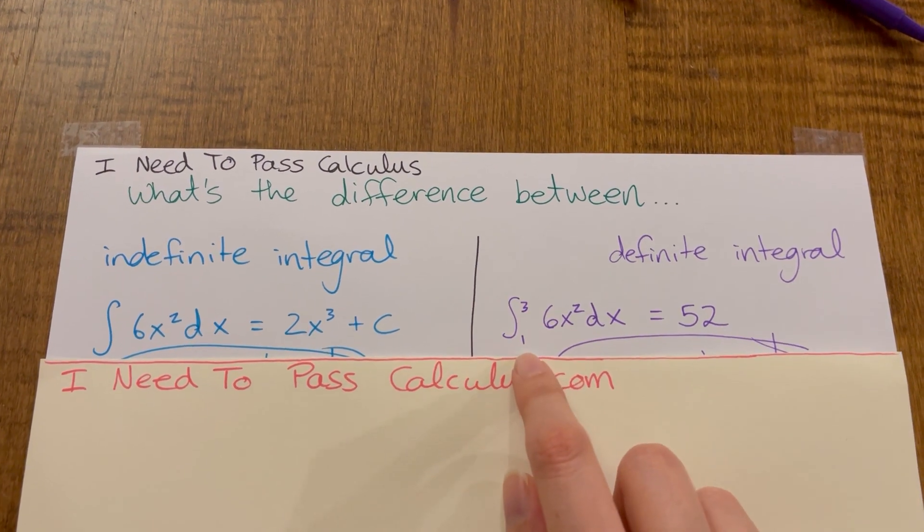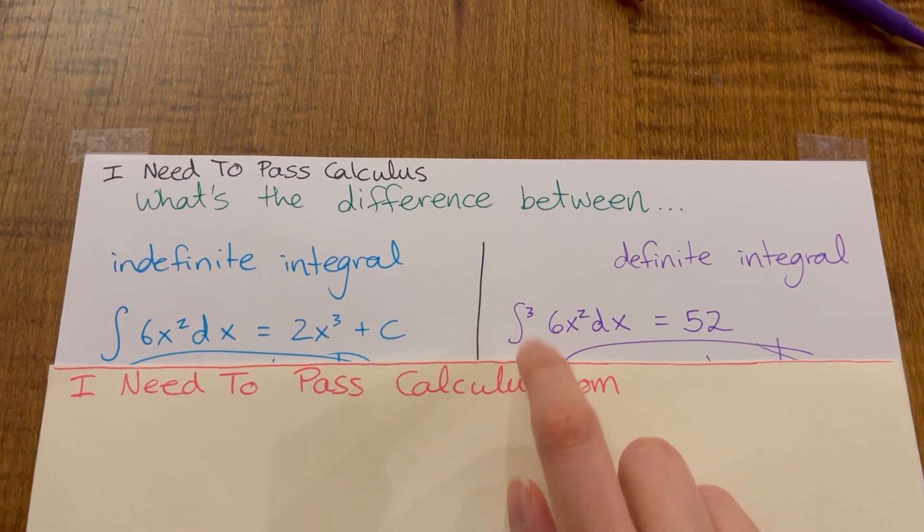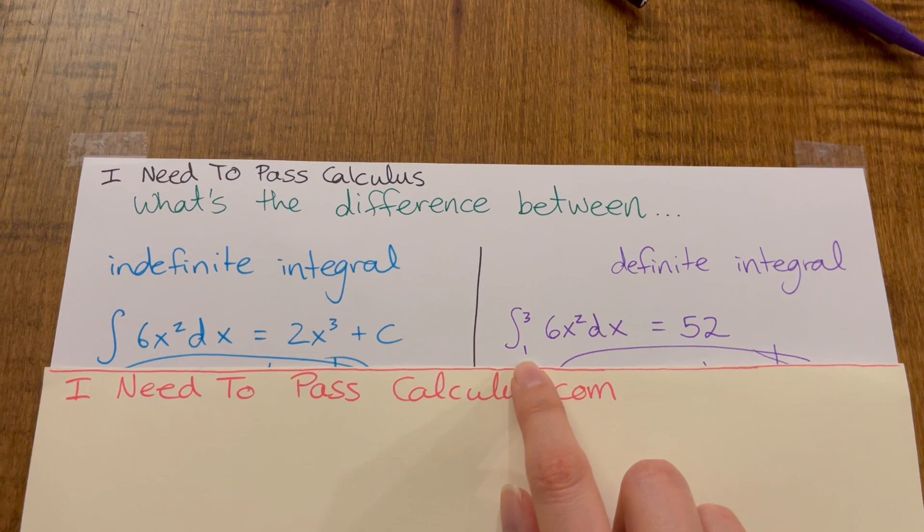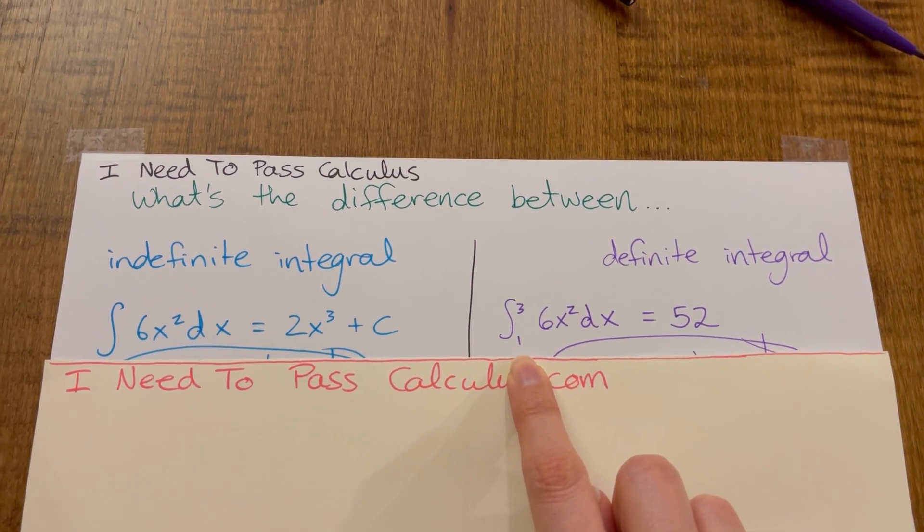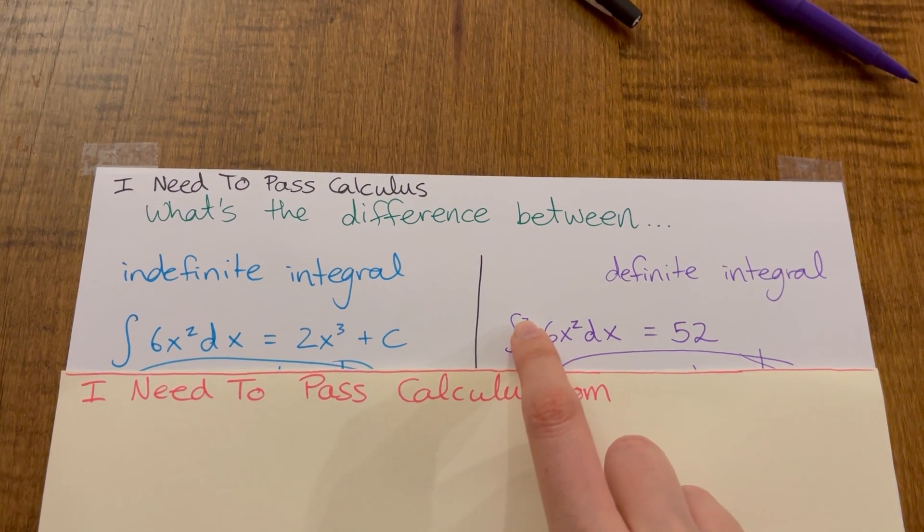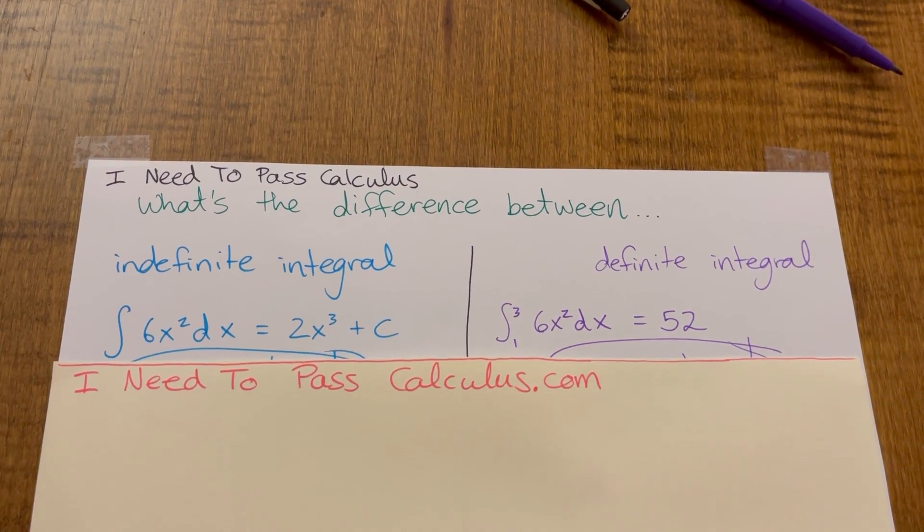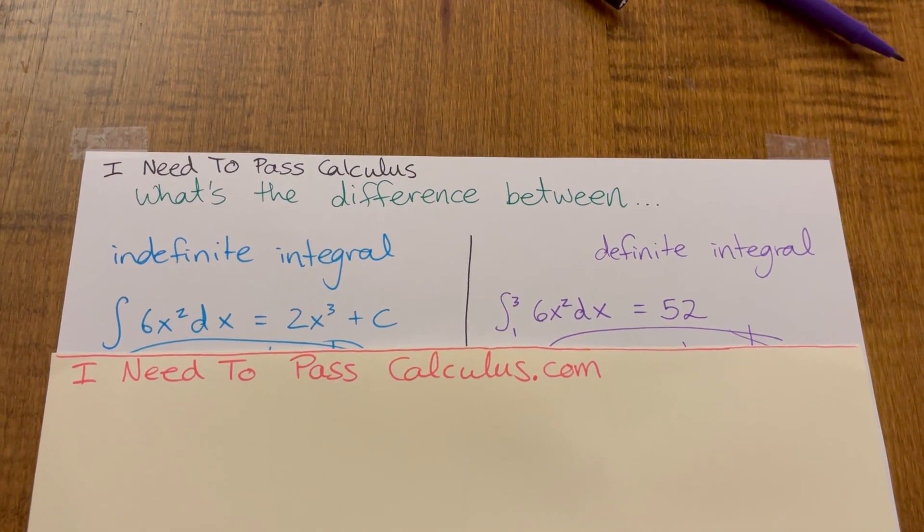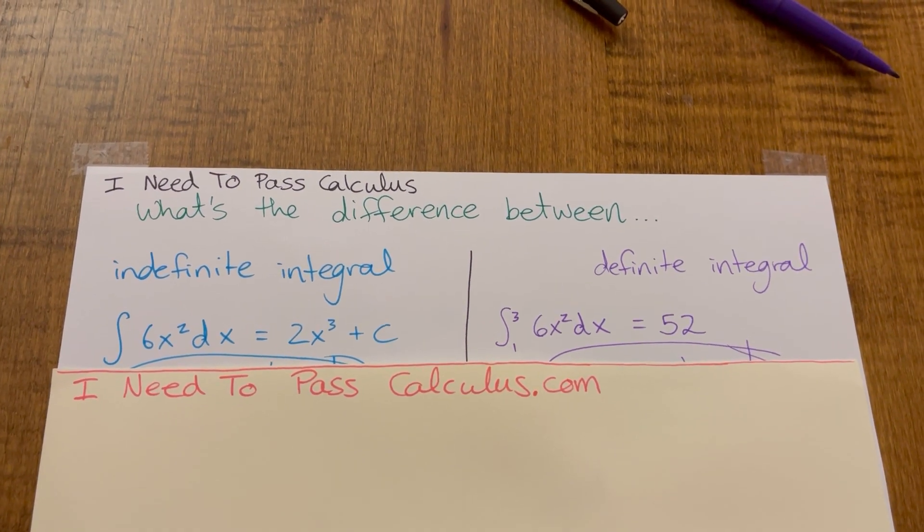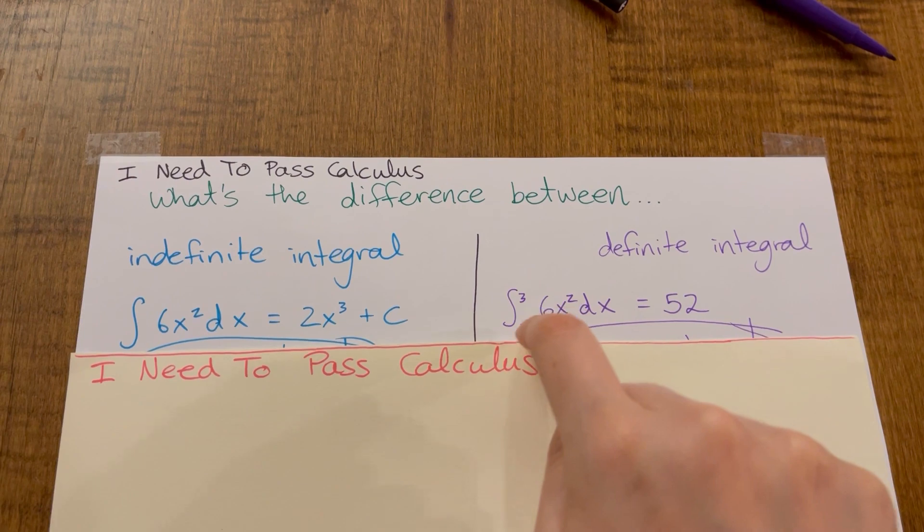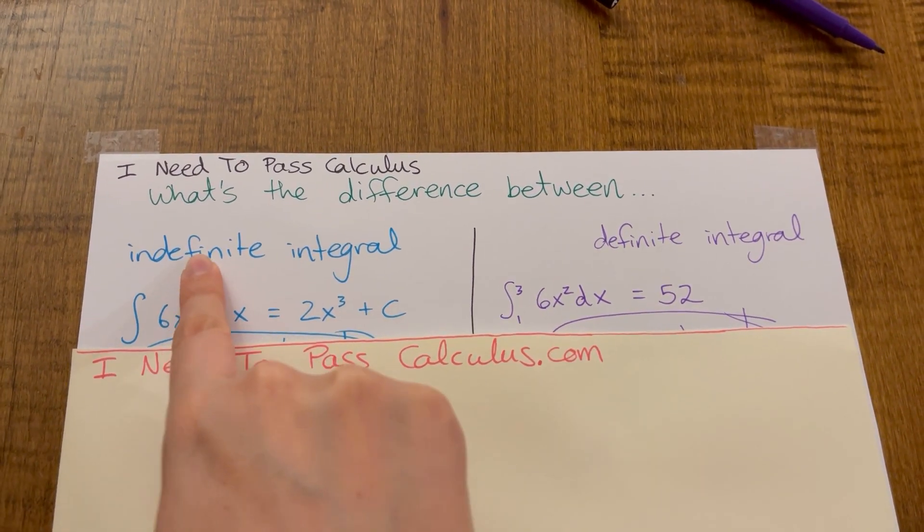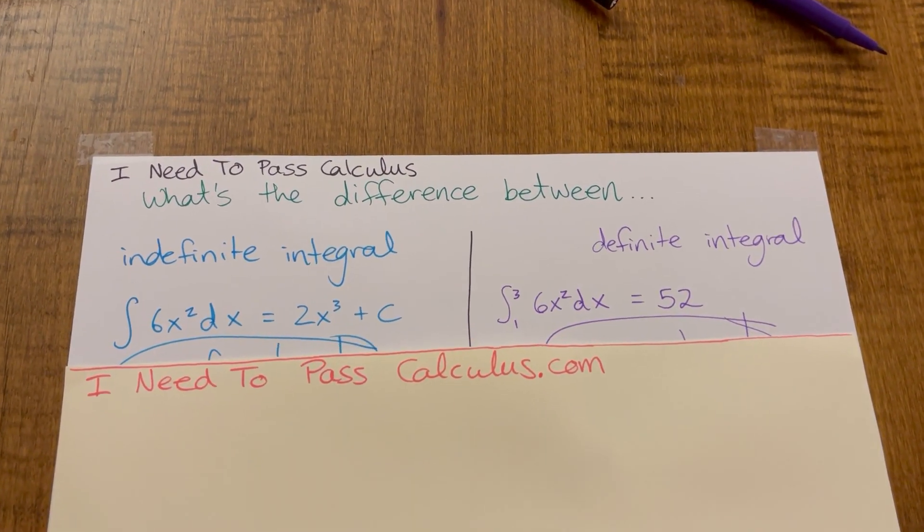Sometimes there'll be letters but letters representing numbers not variables. So it might be like a to b, but a and b represent numbers, not something that can vary and be anything. So that's how you identify which one's which. Definite integrals have the limits of integration, indefinite integrals never do.